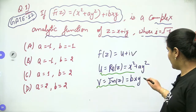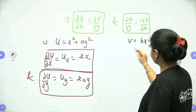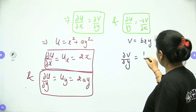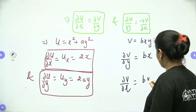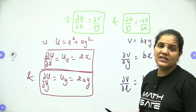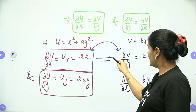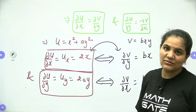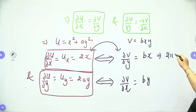Now for the imaginary part v equals bxy: the partial derivative with respect to y gives v_y equals bx, and the partial derivative with respect to x gives v_x equals by. From the Cauchy-Riemann equation, u_x equals v_y means these two quantities should be equal. So 2x equals bx, and x cancels out giving b equals 2.